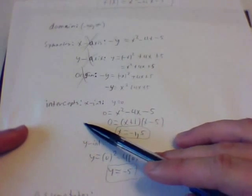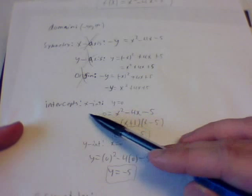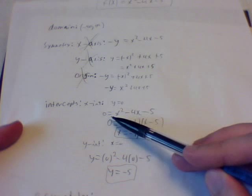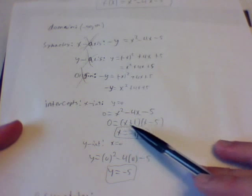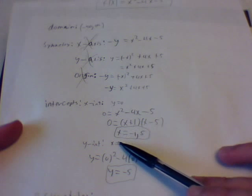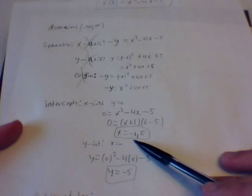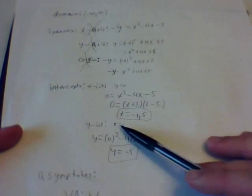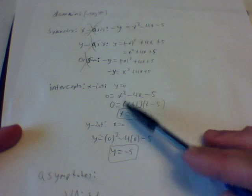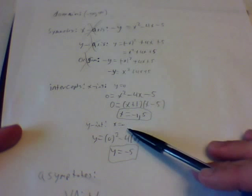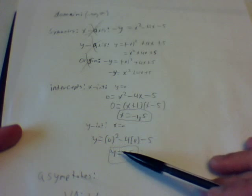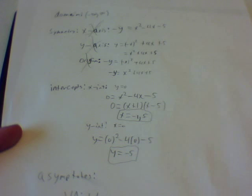Next we're going to find the intercepts. For the x-intercept, we plug in 0 for y. That factors to give (x + 1)(x - 5), so x equals negative 1 and 5. Next is the y-intercept — we plug in 0 for all the x's, and that gives us y equals negative 5.